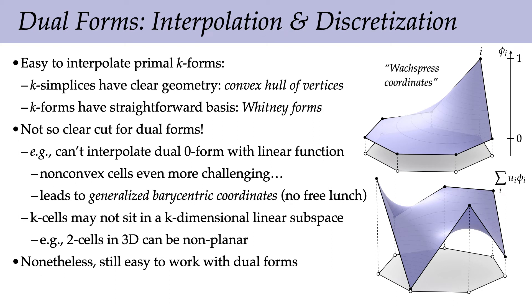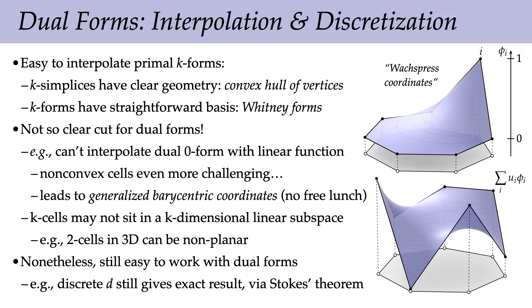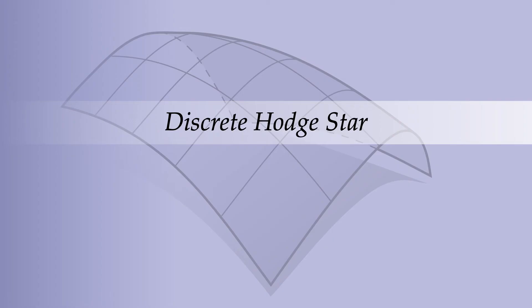Despite these challenges, it's still easy to work with dual forms at the purely discrete level — we still just have a value per dual cell, easy to write the discrete exterior derivative as oriented sums. We want discrete dual forms because we need a discrete Hodge star operator.